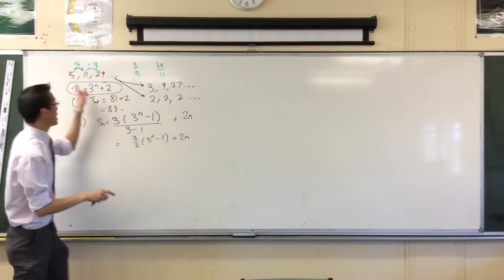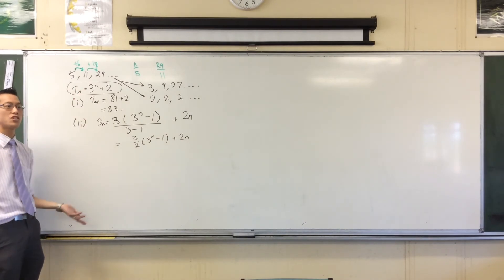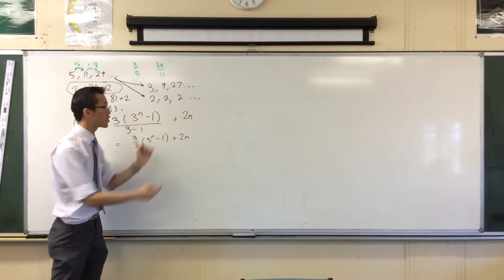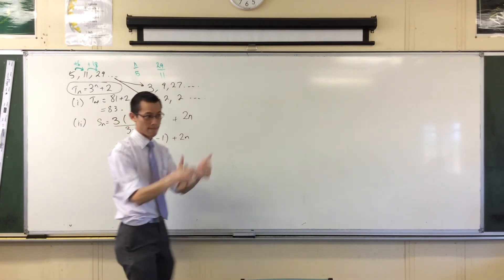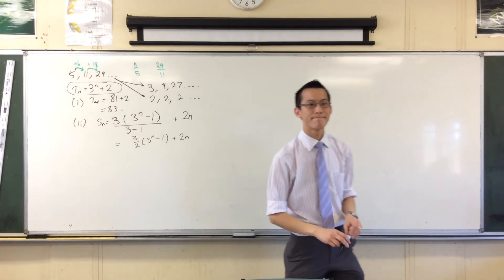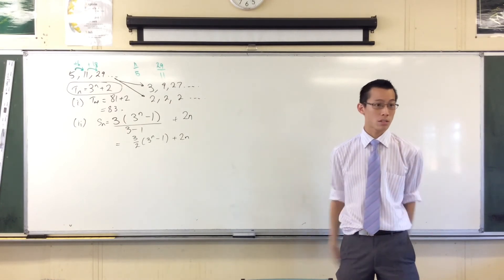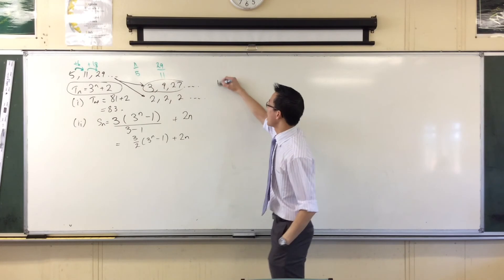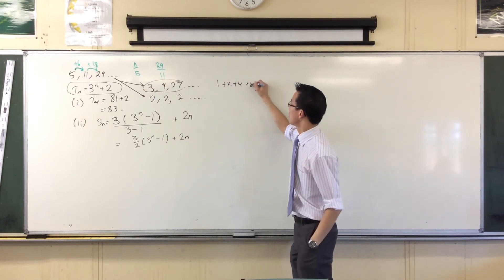So I separated this sequence, which is neither an AP nor a GP, out into two parts, both which I can then deal with with my formulas. Is it possible to have two APs or two GPs to combine together? Of course, absolutely. Like I could take this guy and I could add it to this guy. There we go.